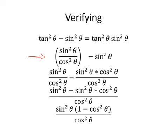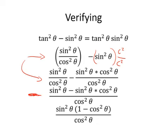So we have sin²θ / cos²θ minus sin²θ. In the next row down, I wanted to get everything to a common denominator. Since I have cos²θ for the first term, I want cos²θ for the second one. So I multiplied the second term by cos²θ / cos²θ. Then, since I have a common denominator, I can put it all under one fraction. So now on the third line, I have sin²θ minus sin²θ · cos²θ, all over cos²θ.